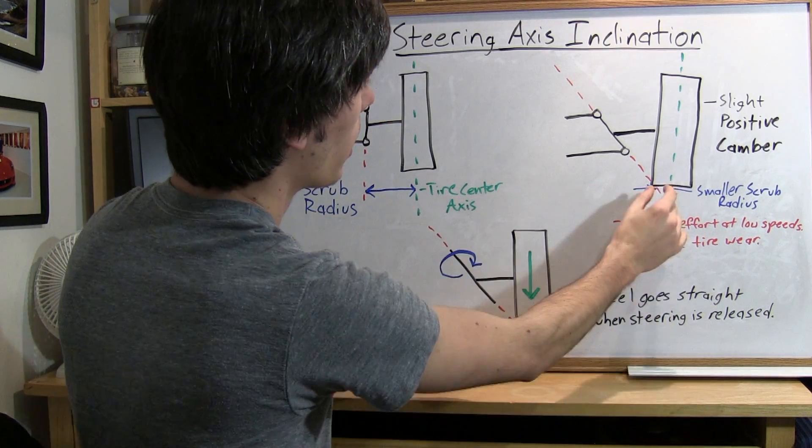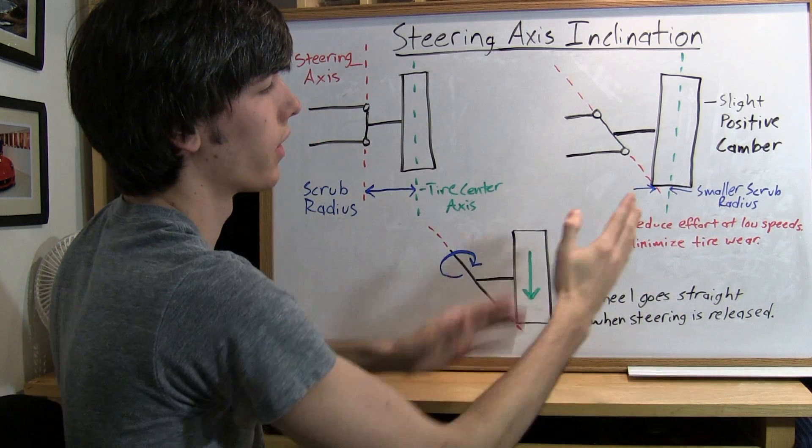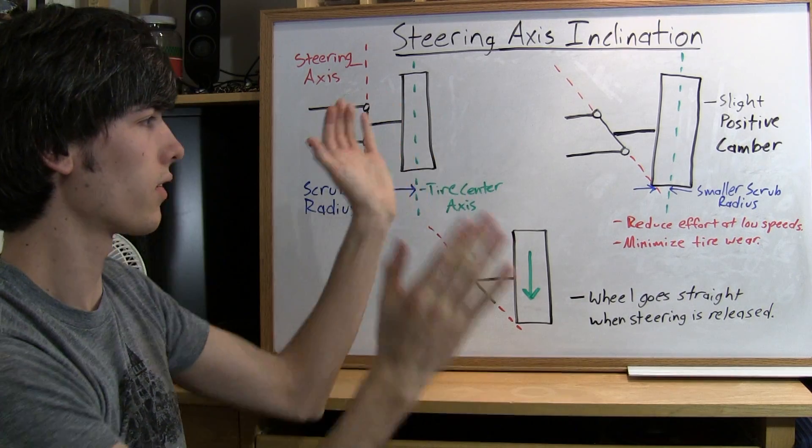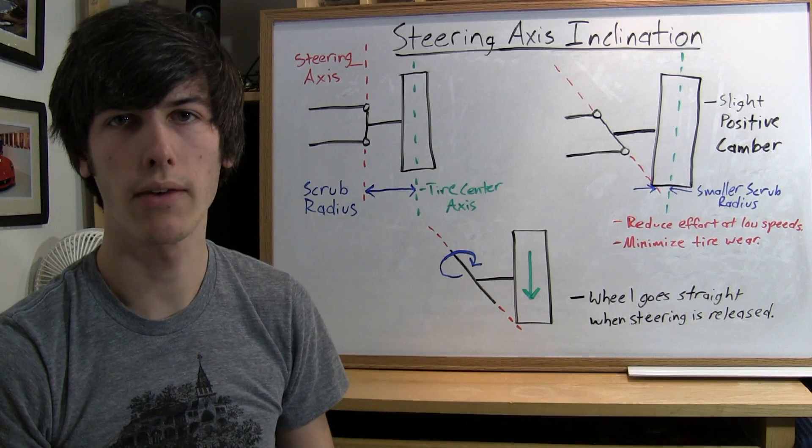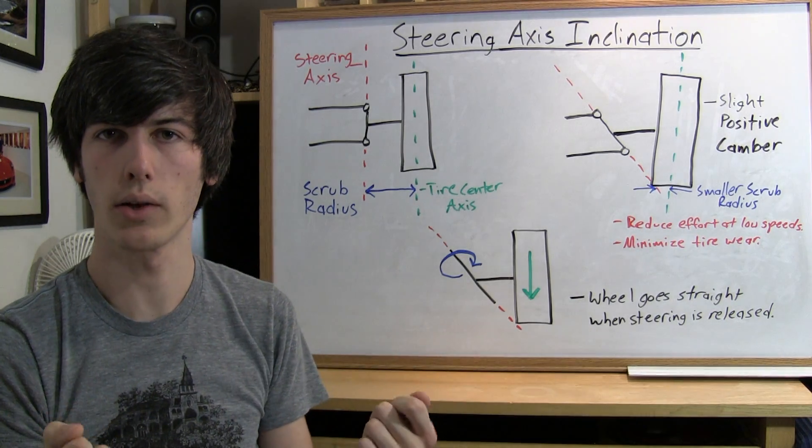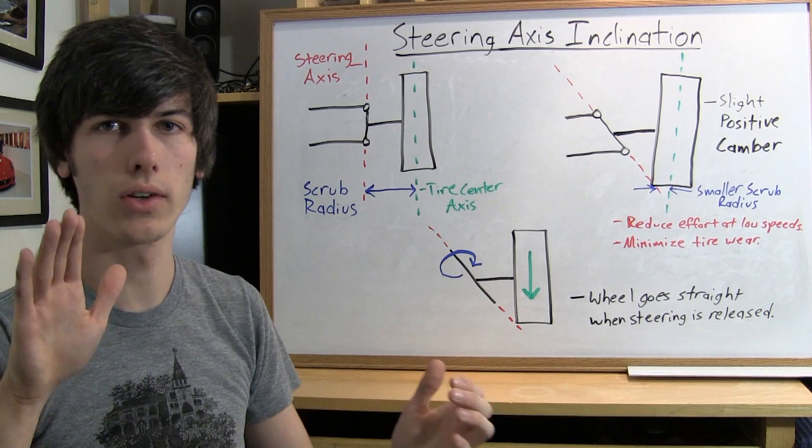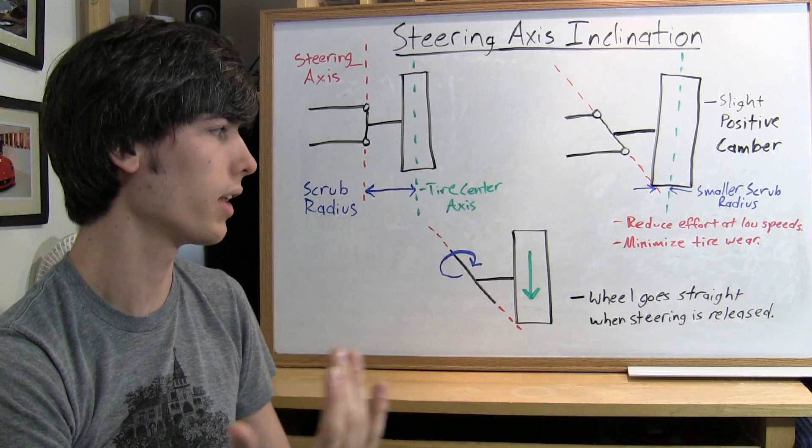Not the exact same point but you're going to have a much smaller scrub radius so that tire can rotate more easily. Since that tire is going to rotate more easily it's going to reduce the effort the driver has to have when you're going at low speeds and turning and it's also going to minimize tire wear because you're not going to be scrubbing it along a large radius.